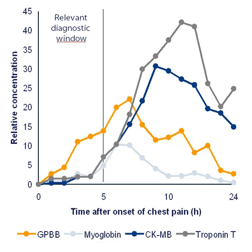In geology and astrobiology, a biomarker can be any kind of molecule indicating the existence, past or present, of living organisms. Biomarkers, versus geomarkers, are also known as biosignatures. The term biomarker is also used to describe biological involvement in the generation of petroleum.